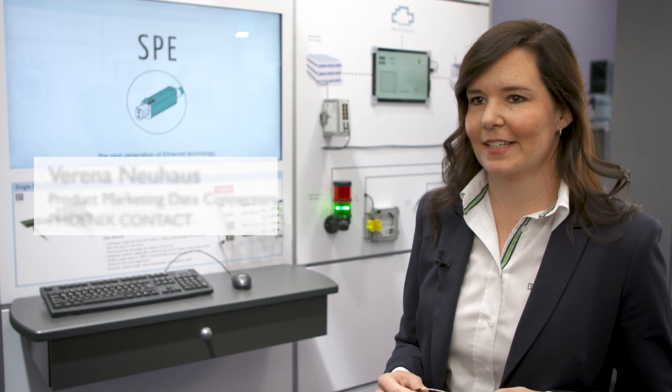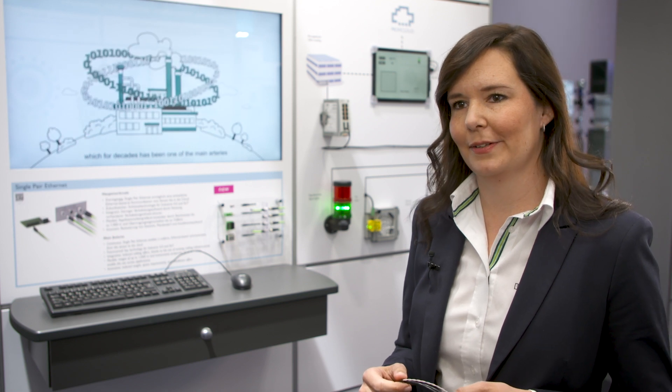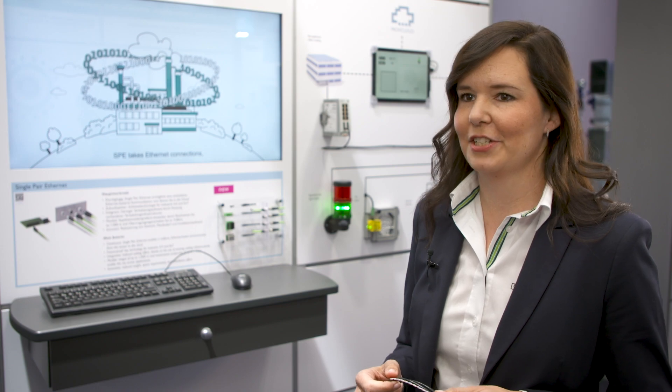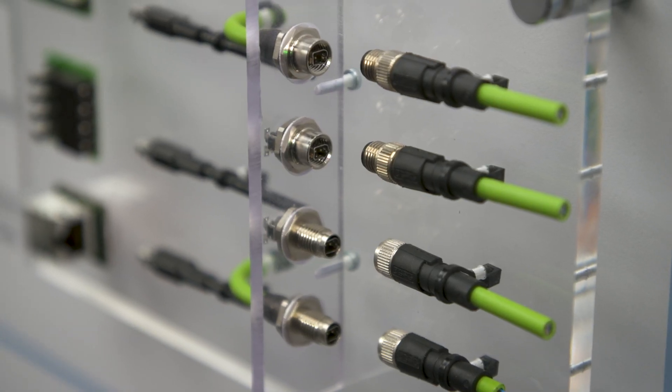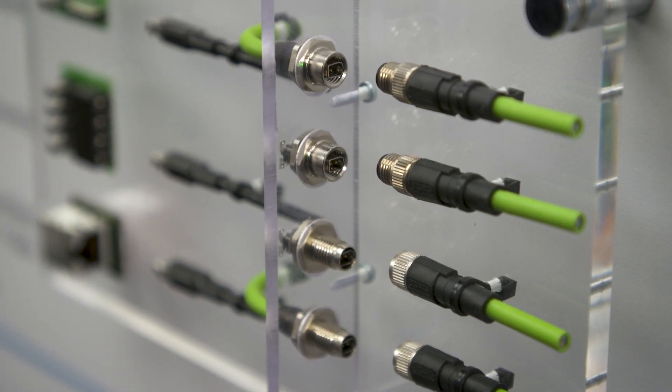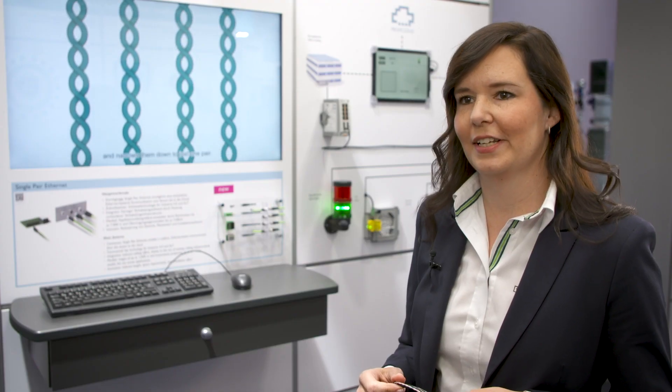Transmission rates up to one gigabit per second and transmission distances up to 1,000 meters are possible. Phoenix Contact offers an integrated and very compact connection system, from IP20 components for building installation to IP67 components for use in industrial automation.